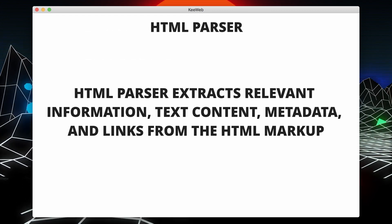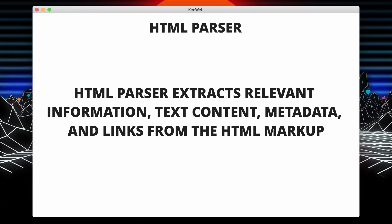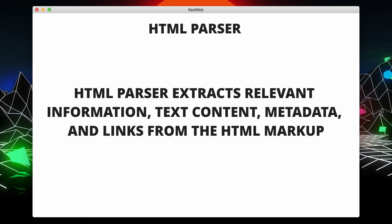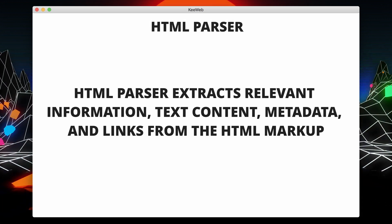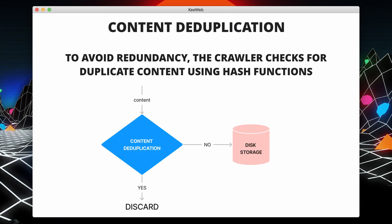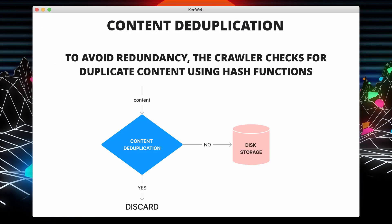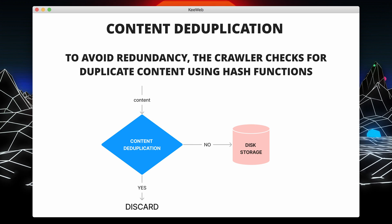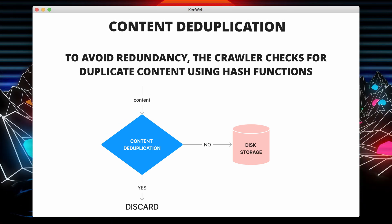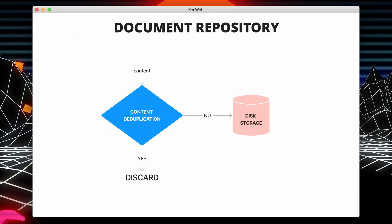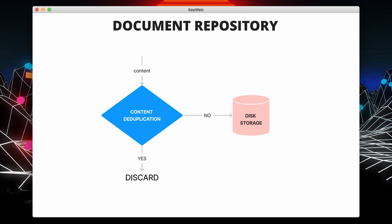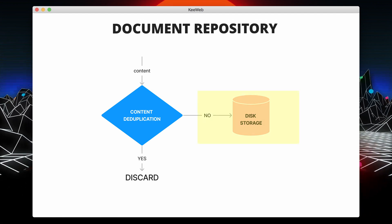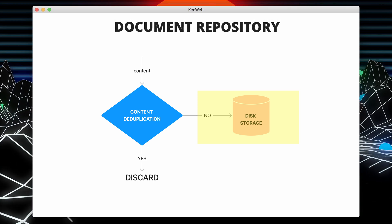After downloading a page, the HTML parser extracts relevant information such as text content, metadata, and links. Then we have content deduplication — to avoid redundancy, the crawler checks for duplicate content using hash functions. If we have seen the page before, we discard it; otherwise, we save it to disk storage. The next component is the document repository, where crawled documents are stored including metadata. This could be a distributed file system or a database, ensuring scalability and reliability.